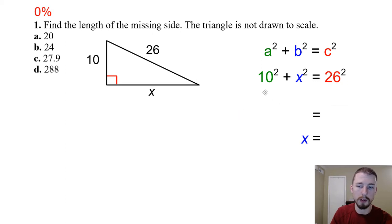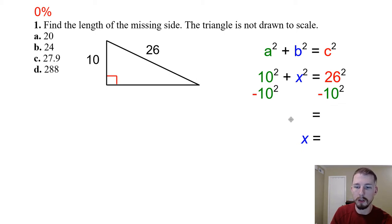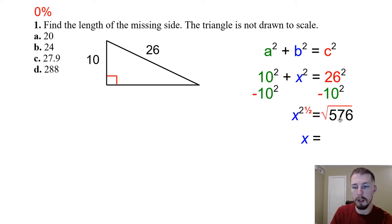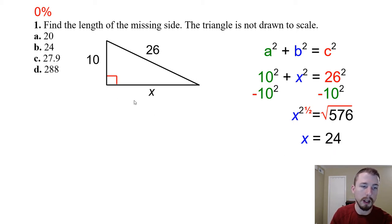We subtract 10² from both sides, so x² = 26² − 10². Put that straight in the calculator: that gives us x² = 576. We don't want x², so we take the square root of both sides. The square root of 576 is 24, so the missing side length is 24. Our answer is B.